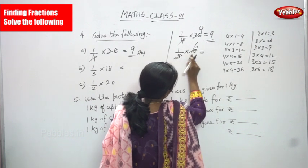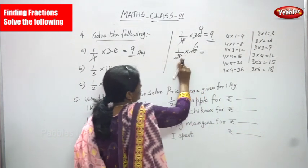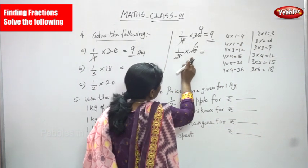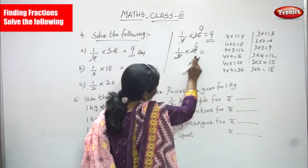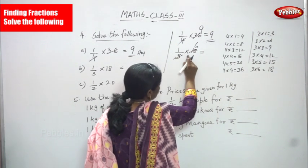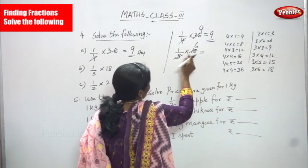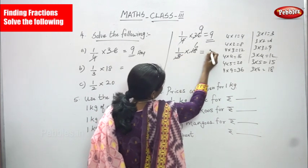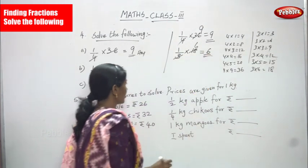1/3 × 18 means one-third of 18. 18 is going to be cancelled by 3, and you get 6. So 1 × 6 = 6. 6 is the right answer for this question.